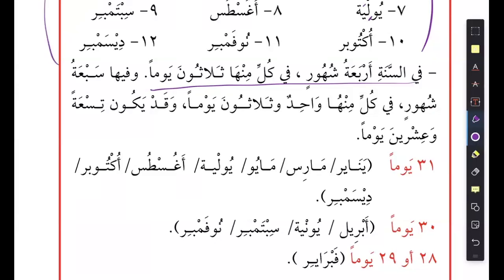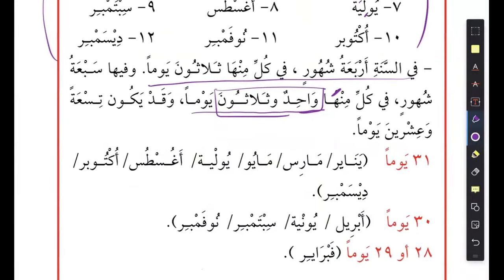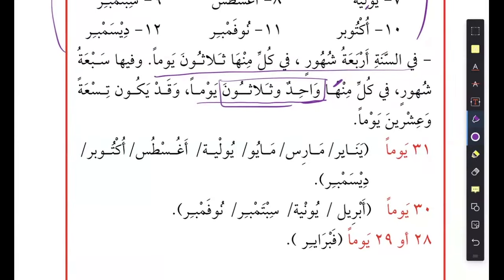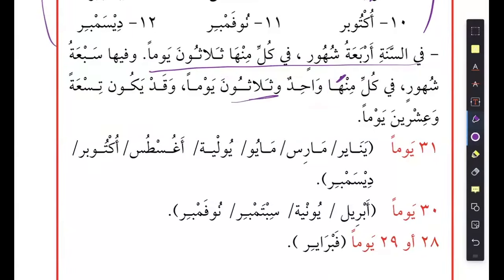وفيها سبعة شهور في كل منها واحد وثلاثون يوماً — there are seven months in which each one has 31 days. These are called عدد المعطوف. Then you have ألفاظ العقود — the 20, 30, 40, 50, and so on. These are always the same for masculine and feminine, like أربعون، خمسون — always the same.